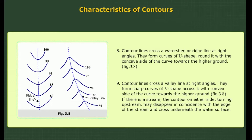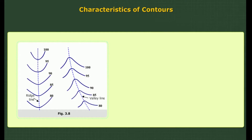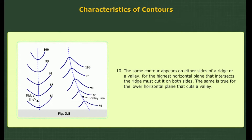10. If there is a stream, the contour on either side turning upstream may disappear in coincidence with the edge of the stream and cross underneath the water surface. The same contour appears on either side of a ridge or a valley, for the highest horizontal plane that intersects the ridge must cut it on both sides. The same is true for the lower horizontal plane that cuts a valley.